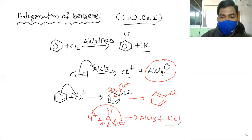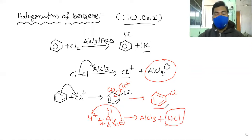The product is chlorobenzene. This is halogenation of benzene. Thank you students, like and share, thank you for watching.